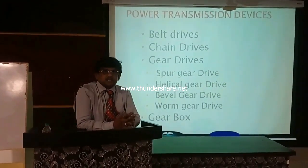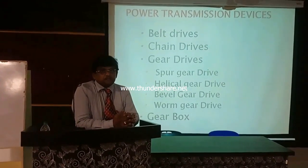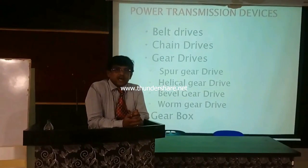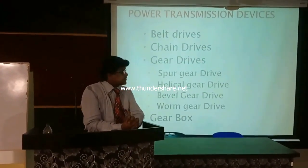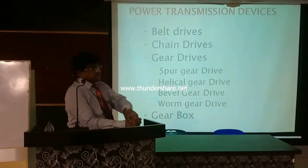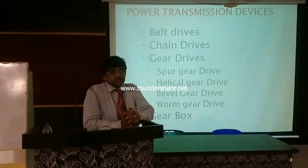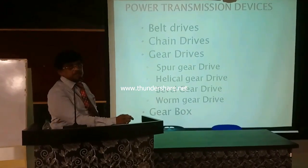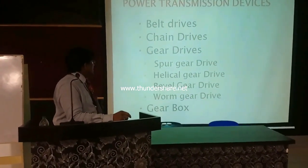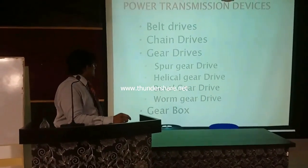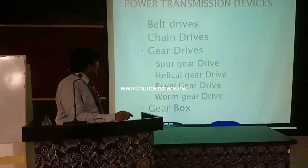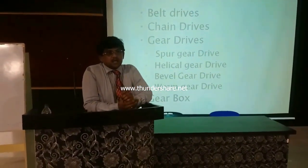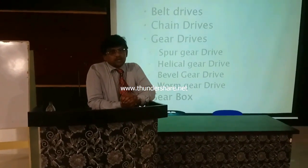Belt drive uses 90 to 95% transmission efficiency. Chain drive uses 95 to 97% efficiency. Gear drive uses 98 to 99%. In gear drives, spur gear drive uses 99% transmission efficiency, chain drive uses 98%, bevel gear gives us 98%, and worm gear drive gives us 80 to 90% only.